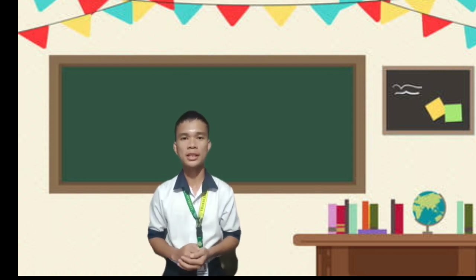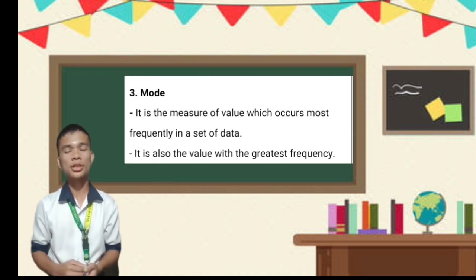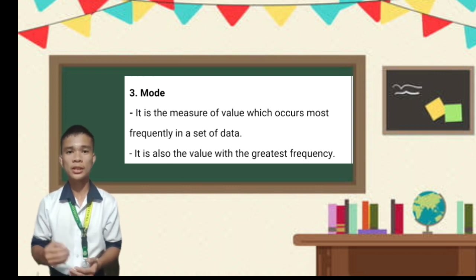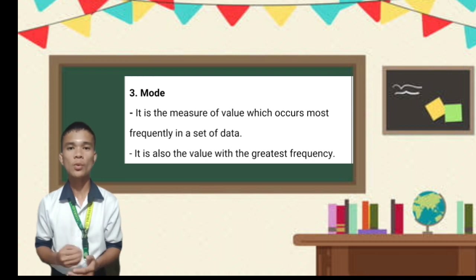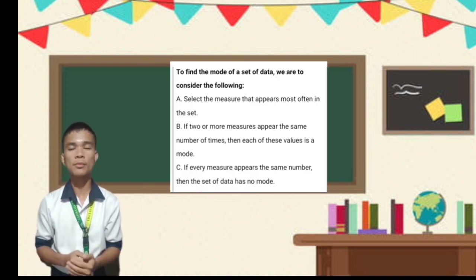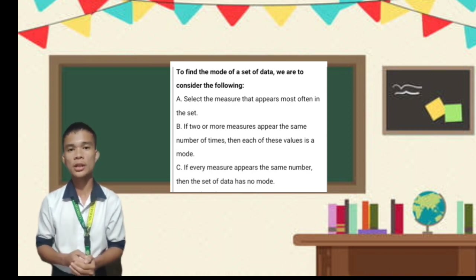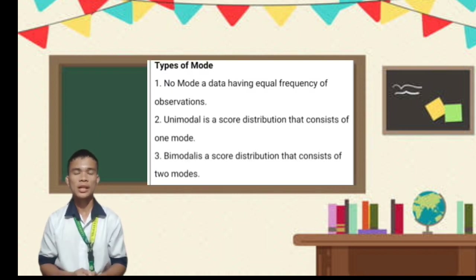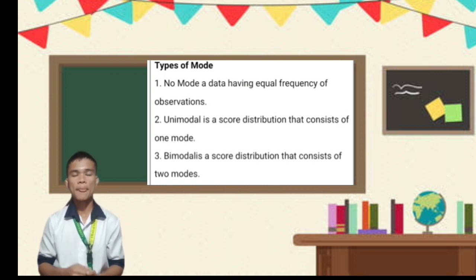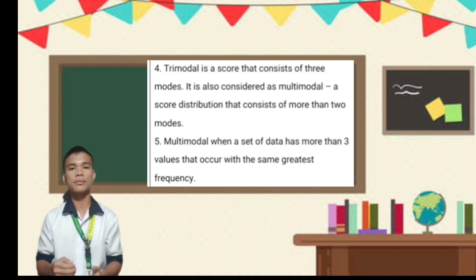Let's proceed to another type — the mode. The mode is the measure of the value which occurs most frequently in a set of data; it is the value with the greatest frequency. Always remember that the data can have more than one mode or none at all. To find the mode: select the value that appears most often; if two or more values appear the same number of times, each is a mode; if every value appears the same number of times, there is no mode.